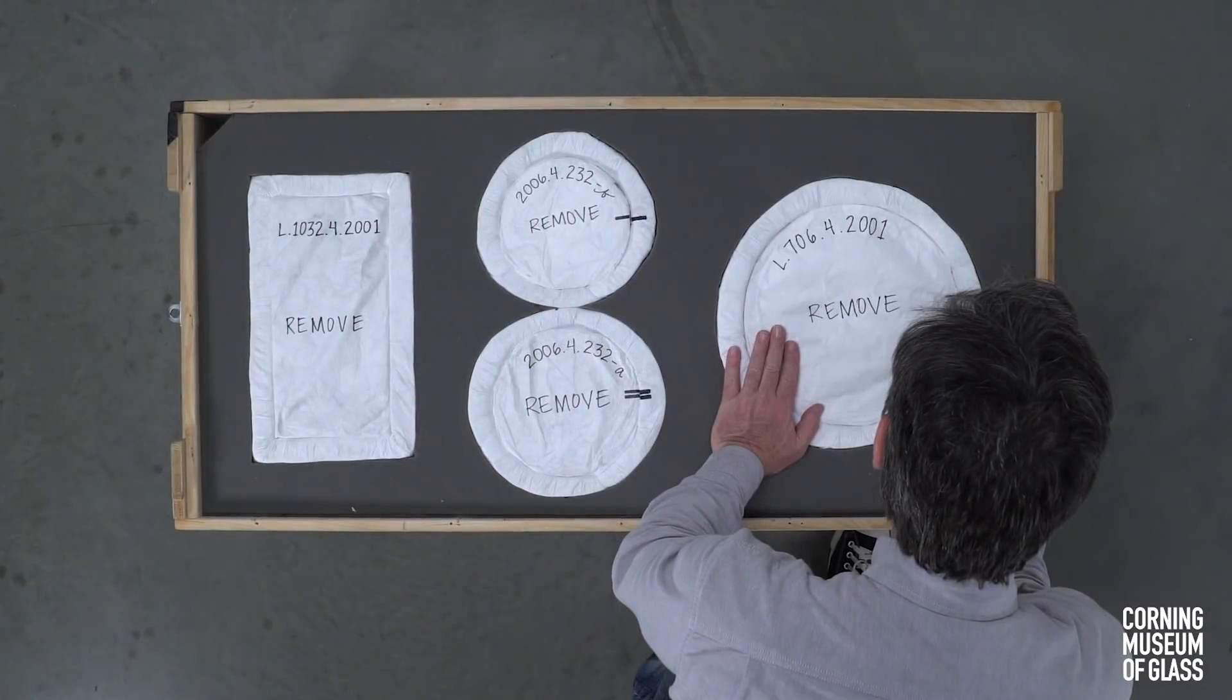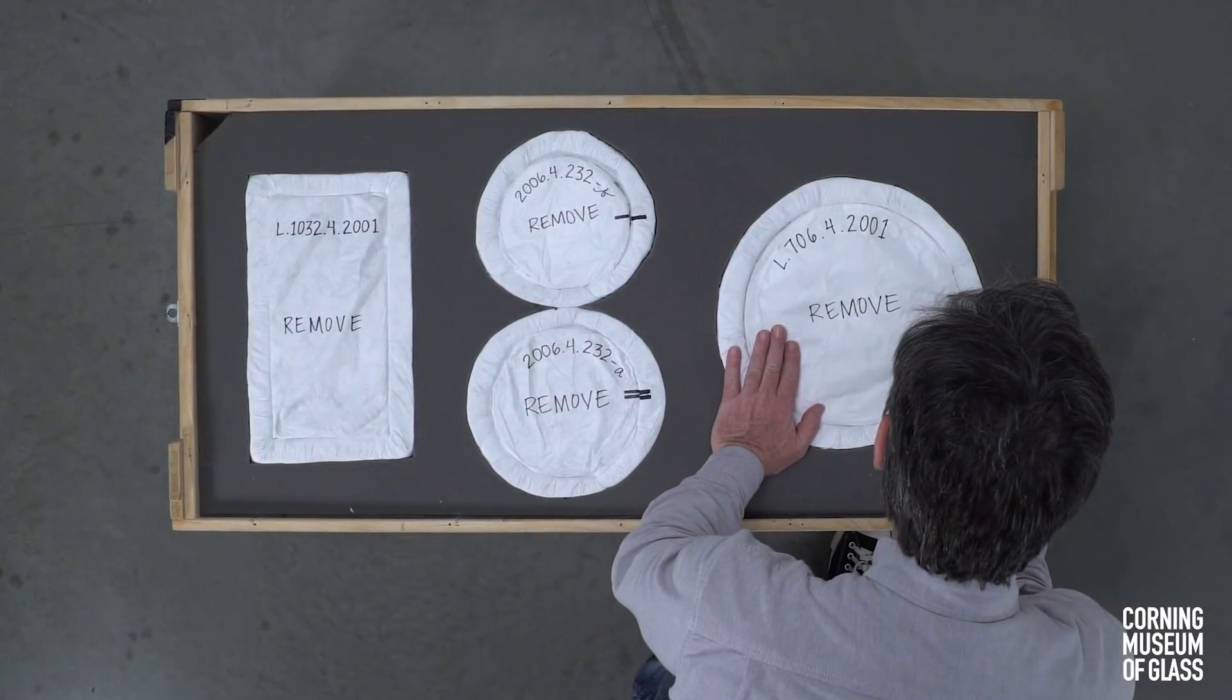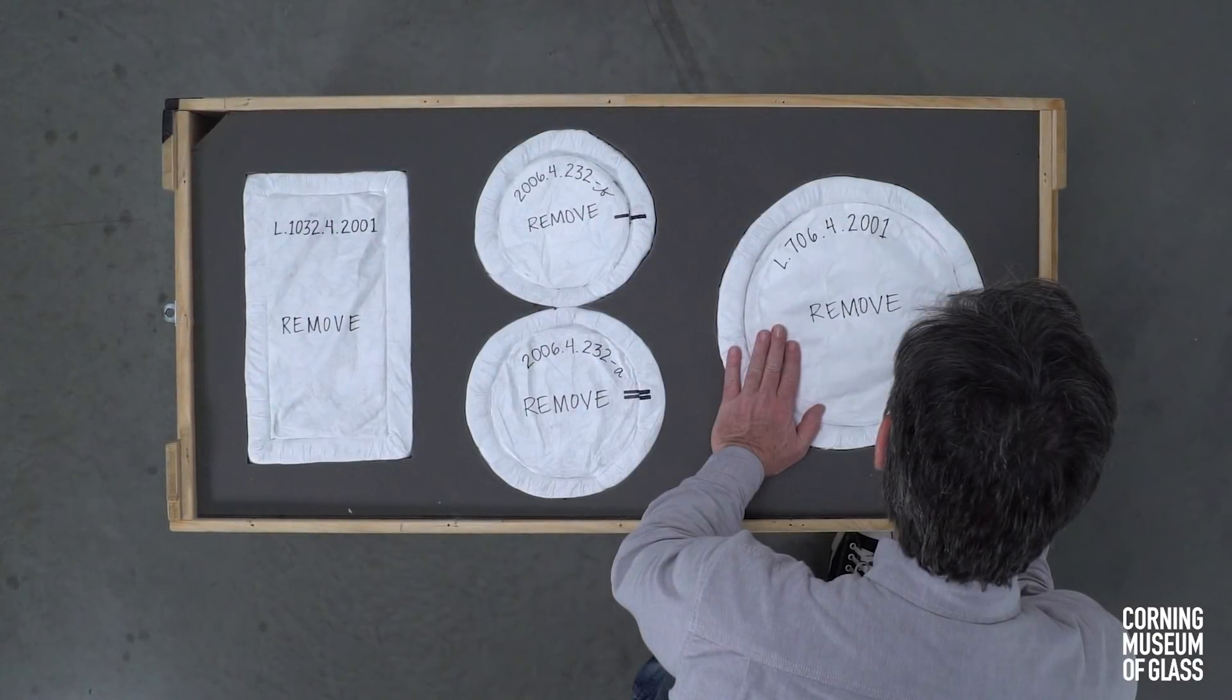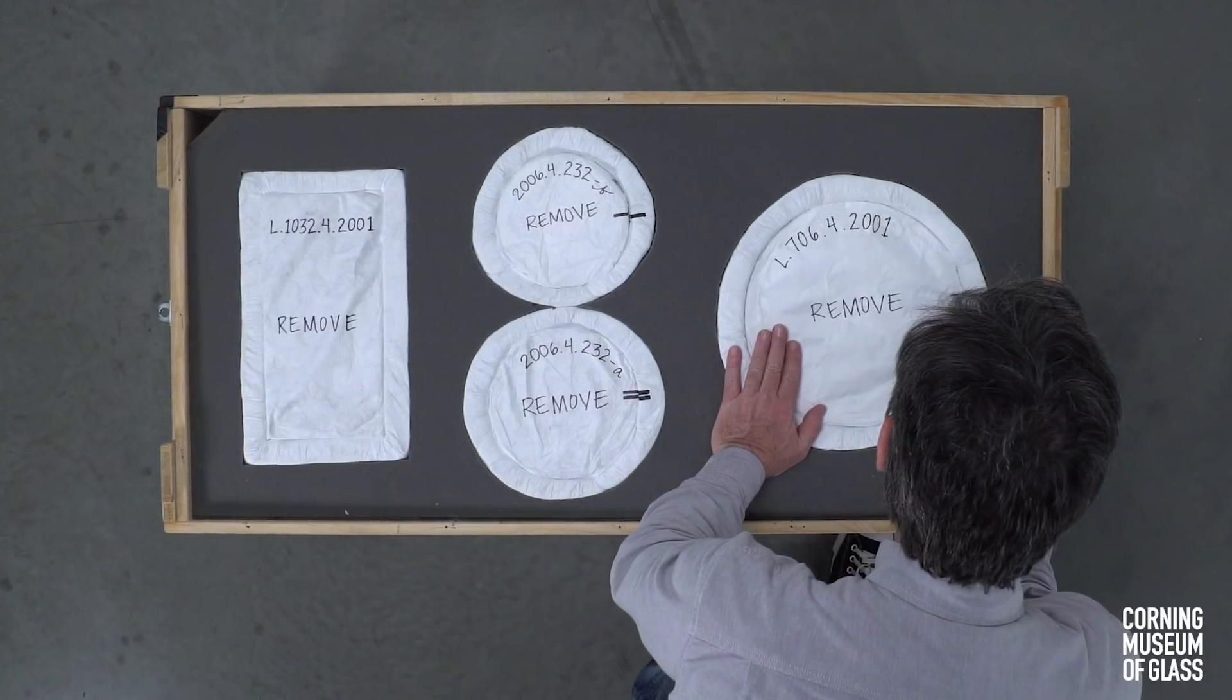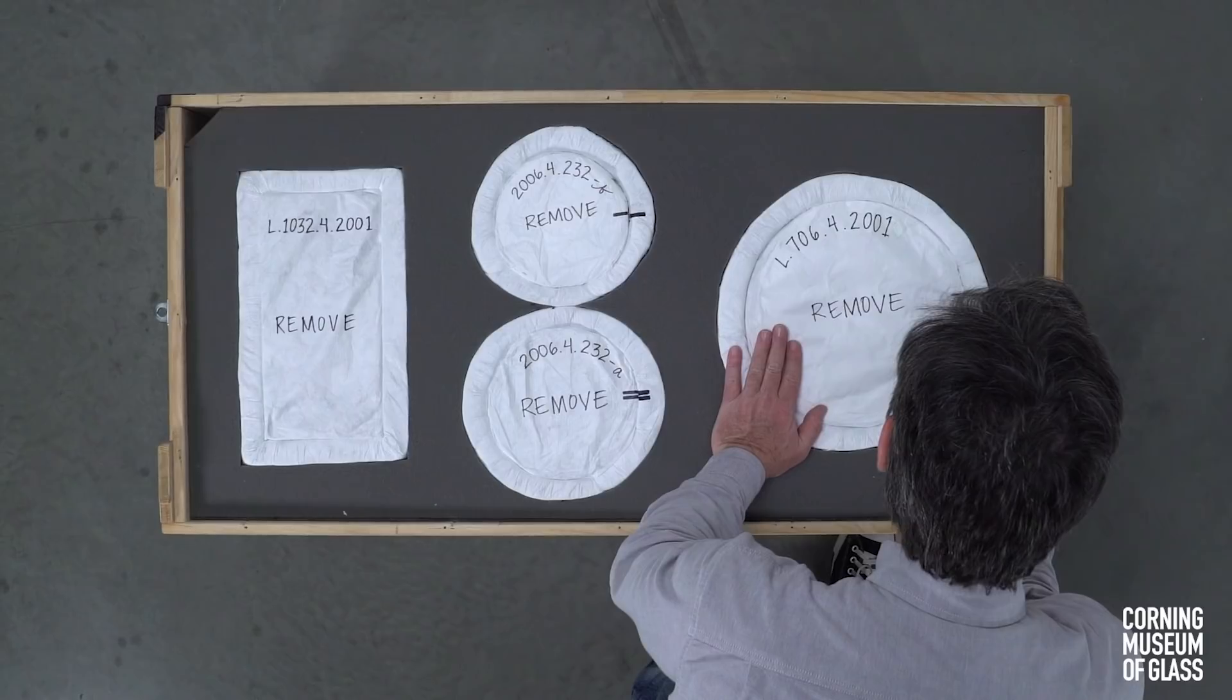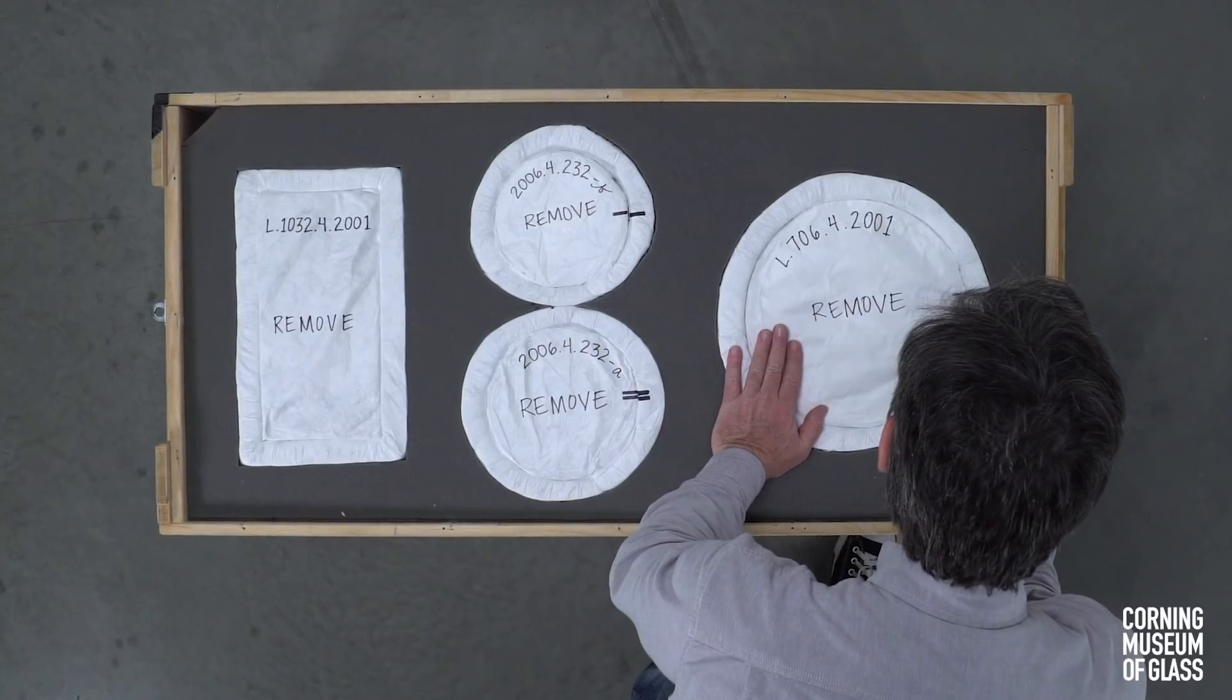This video covers the materials and methods used for foam cavity packing. Cavity packing provides excellent protection for objects during long-distance travel. We will demonstrate by packing a few objects into a wooden crate. You may also use this approach for the box-within-a-box method shown in our previous video, soft packing.